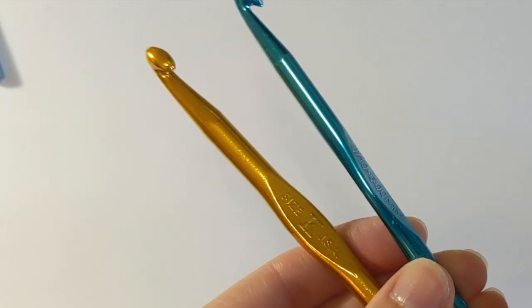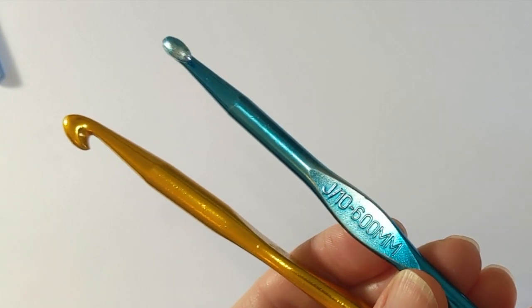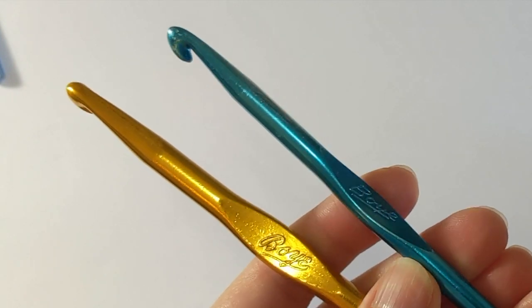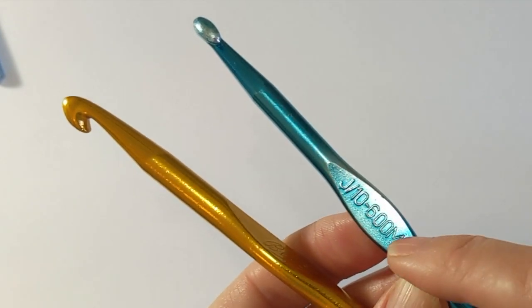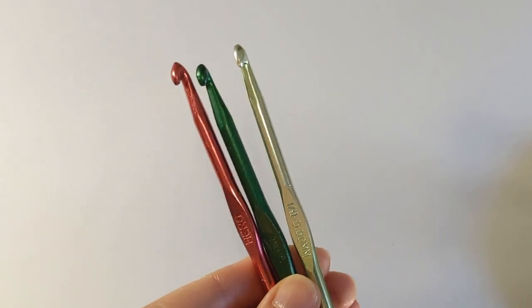So do keep that in mind if you are looking to expand your repertoire of hook sizes and you like a tapered hook and you like the Boye brand. Keep an eye out for the J hooks in particular. It may surprise you that some of the more modern looking ones are still somewhat vintage at this point.